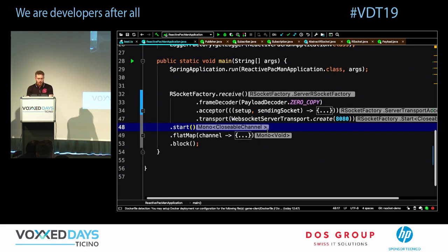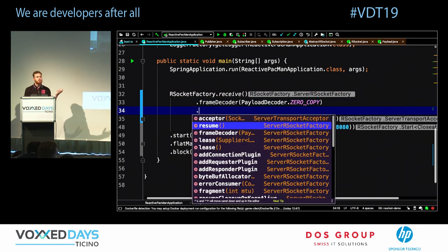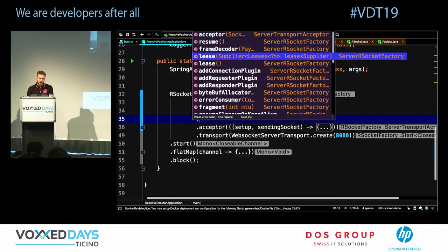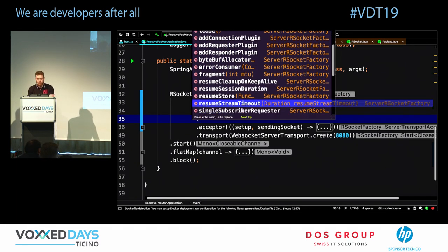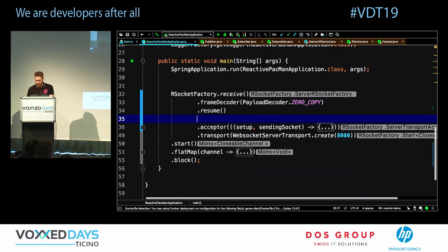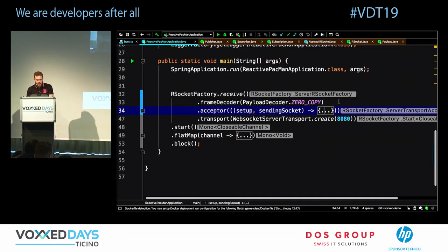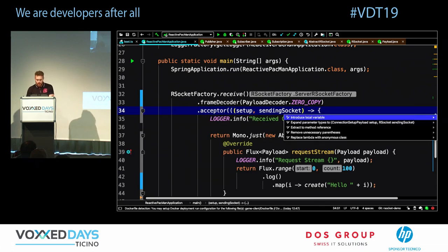To create a receiver or server, use RSocketFactory. It lets you create a receiver, configure communication, enable resumability with a single builder method, specify storage for elements sent during connection disruption, enable fragmentation — lots of guarantees built in without implementing anything yourself. There's also leasing support.